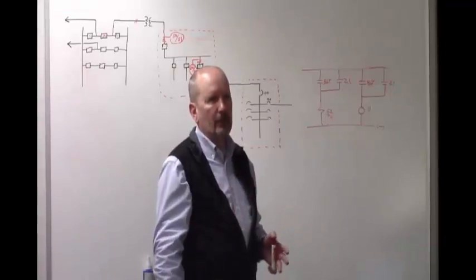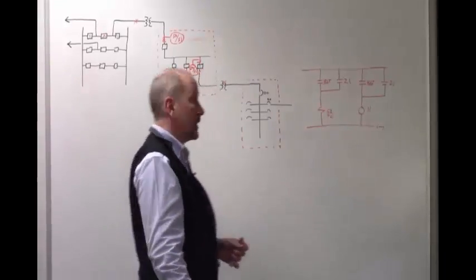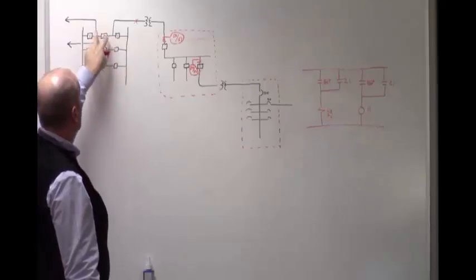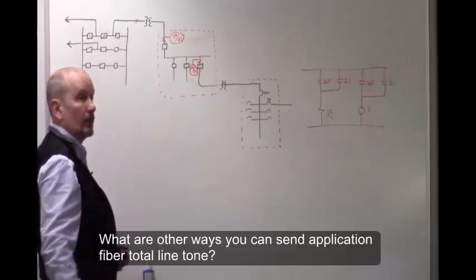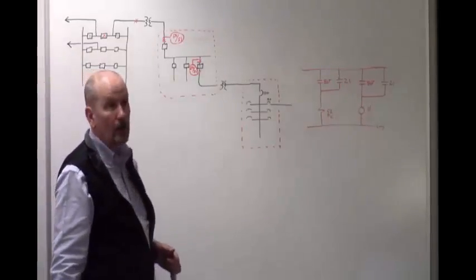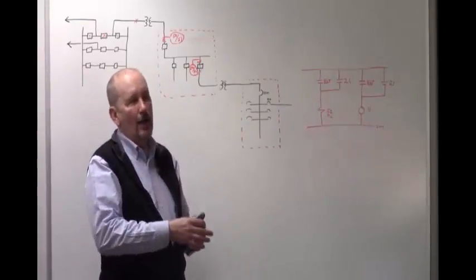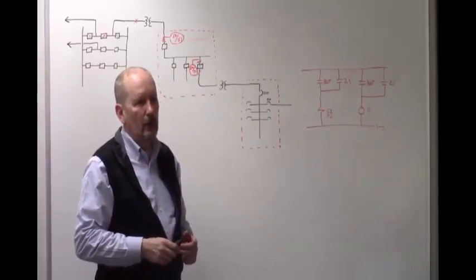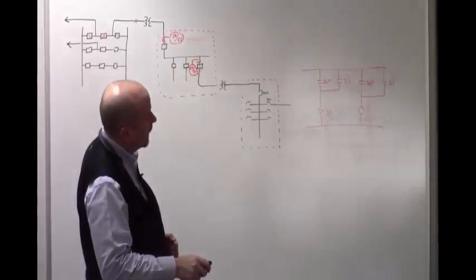Transfer trip can be done via fiber, phone line, tone, and other communication methods — we're going to cover all of that in a couple of classes. Protective trips initiate BFIs; control trips do not.